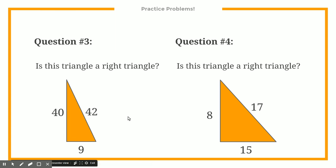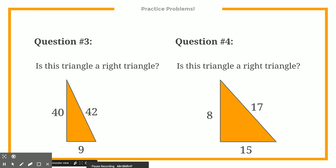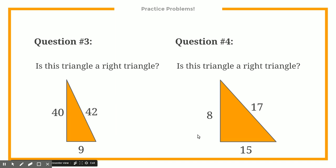You now have a couple of problems to try on your own. The right angles are in the bottom left corner, just like we had before. Plug the values into the Pythagorean theorem — if the left side is the same as the right side, then you know it is a right triangle. Take a few minutes and solve these problems.